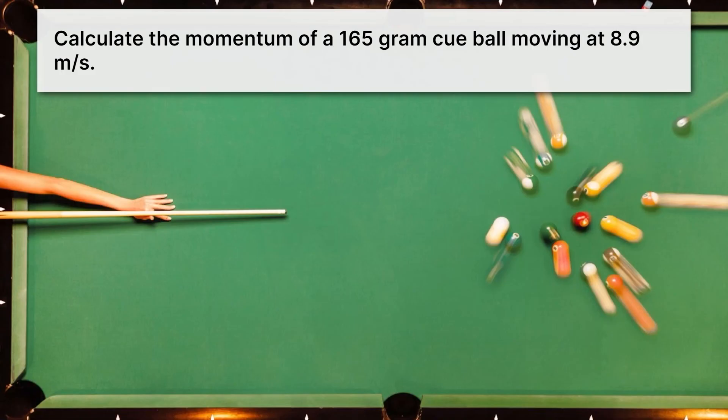Okay, it's your turn now to calculate momentum. Calculate the momentum of a 165 gram cue ball moving at 8.9 meters per second. If you feel unsure of how to begin, go ahead and rewatch the calculation we just did. It's very similar. And then come back here.